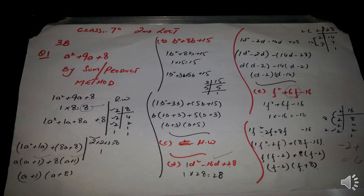Part b: b² + 8b + 15. Again the coefficient of the highest power is 1 and the last term is 15. We multiply to get 15, then take the LCM of 15: 3 × 5. We split 8b into b + 3b and 5b + 15. Taking b common from the first bracket gives (b + 3), and 5 common from the second gives (b + 3). The factors are (b + 3)(b + 5). This is your homework.